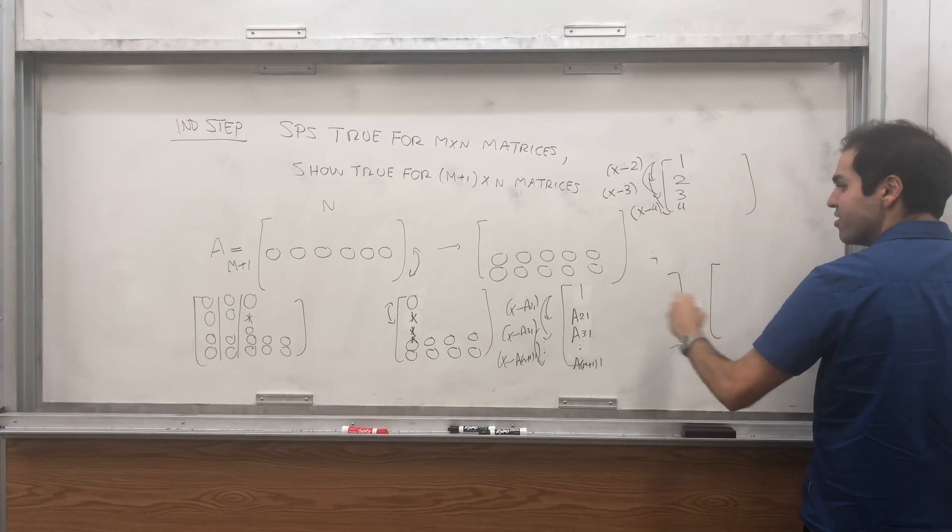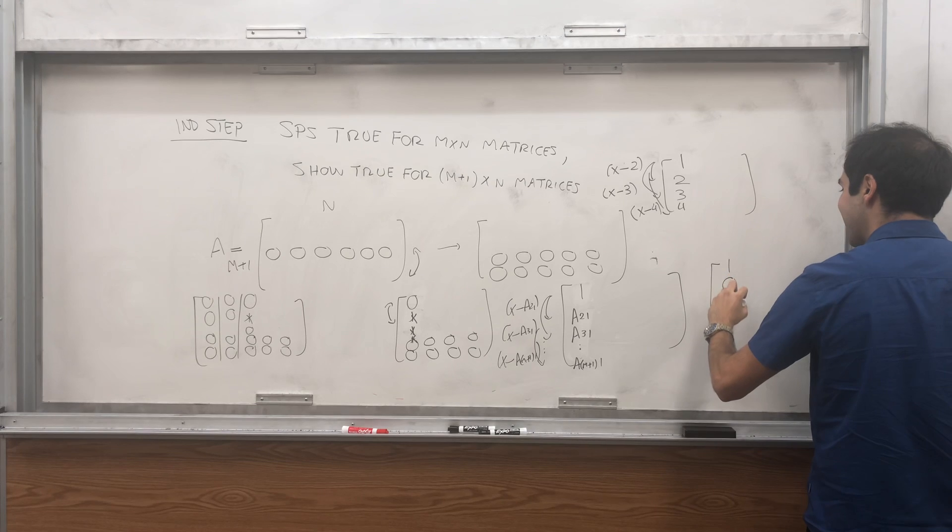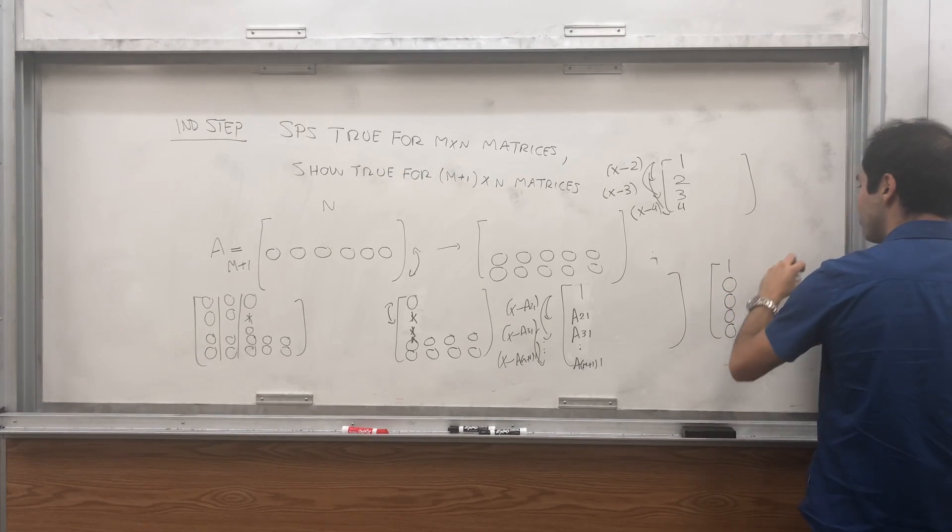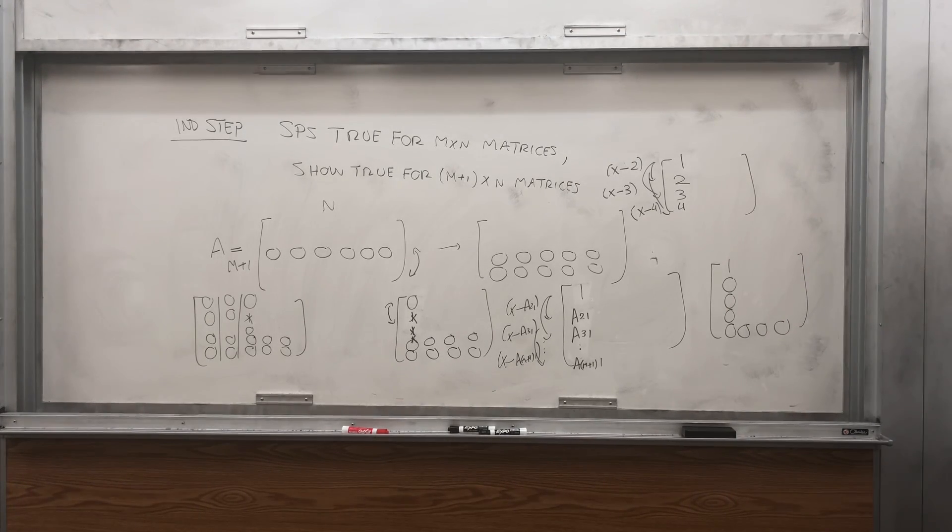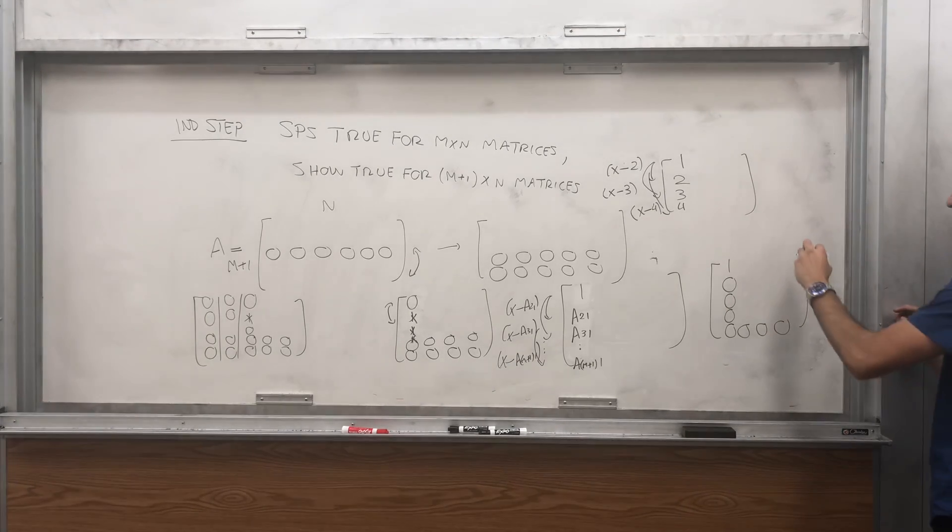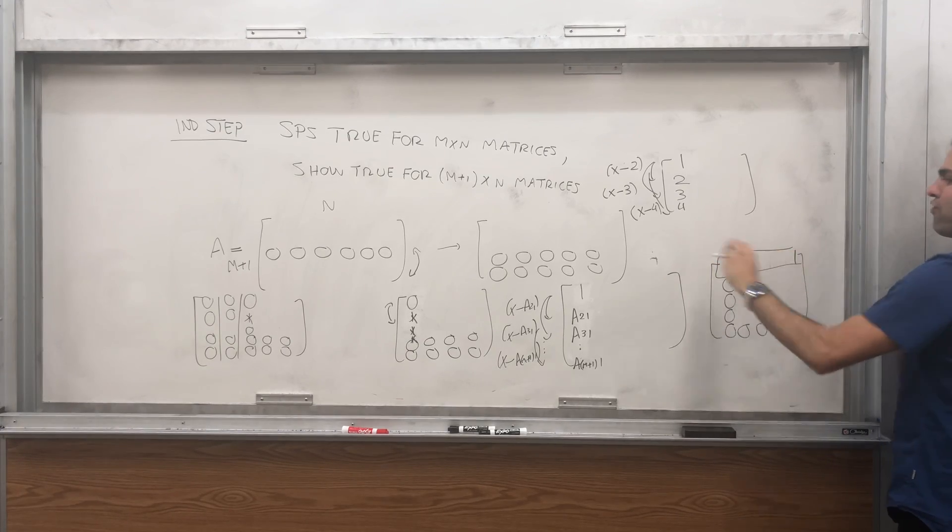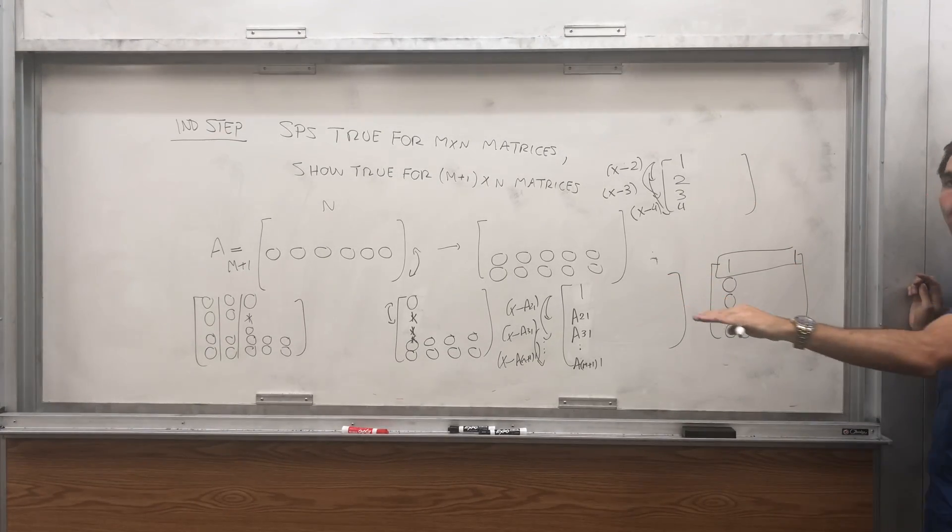So after this process, you actually get that the first column is one and bunch of zeros and then a bunch of zeros at the bottom. And then basically what I'm saying is the first column is done. First row is done.